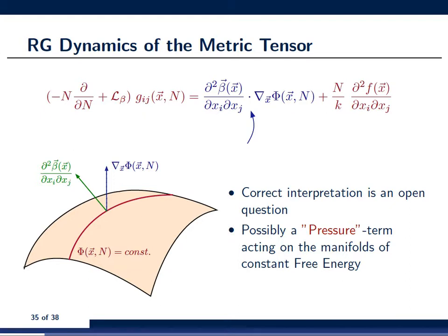And, as a consequence, this term d squared beta / dxi dxj, is acting like a force or like a pressure on these submanifolds of constant free energy. So, this is sort of the interpretation of the first term of the right-hand side.